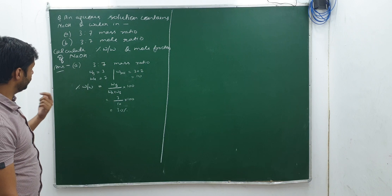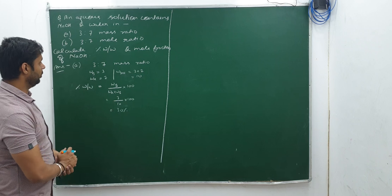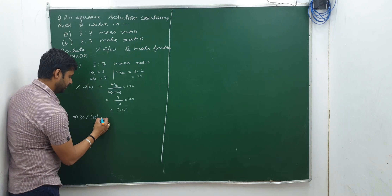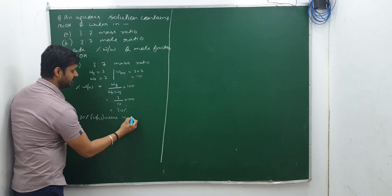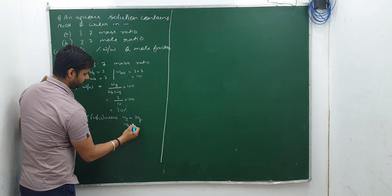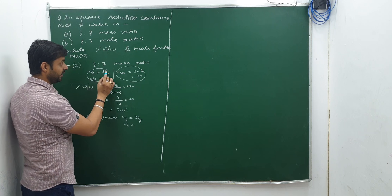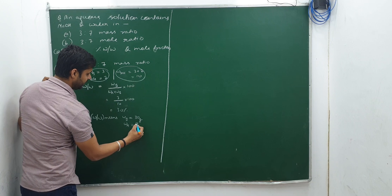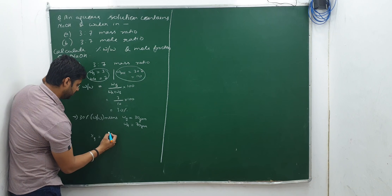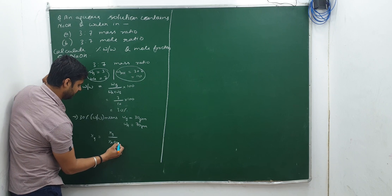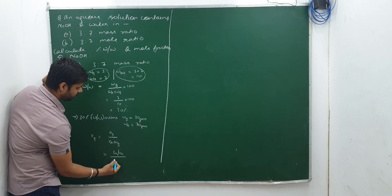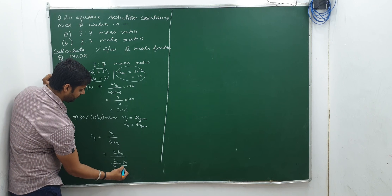Next, solve for mole fraction. Since 30% w/w means W_B = 30 g and W_A = 70 g. ξ_B = N_B / (N_A + N_B) = (30/40) / (70/18 + 30/40). You can solve that at your end. N_B = 30/40 = 0.75, N_A = 70/18 ≈ 3.89. ξ_B = 0.75 / (3.89 + 0.75). I think you will solve it at your end.